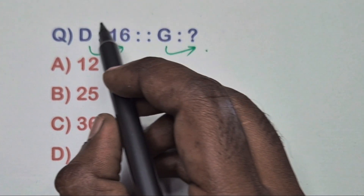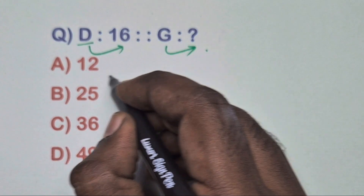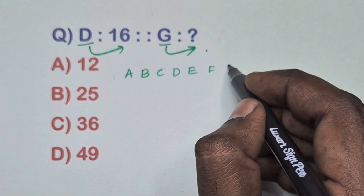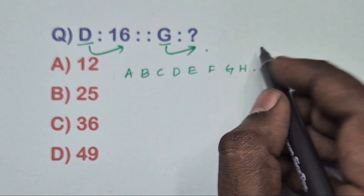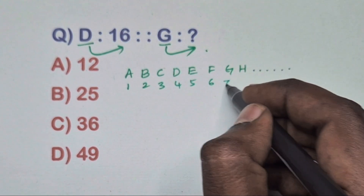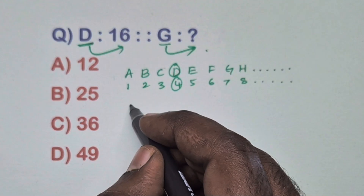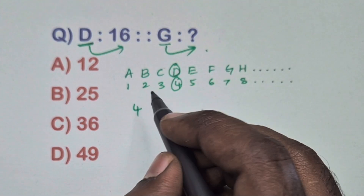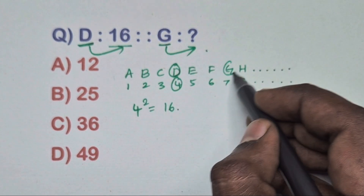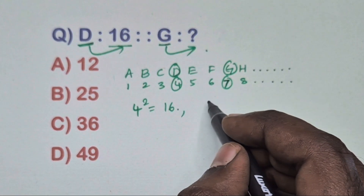This question involves alphabets and numbers. Find the relation: take D. The alphabets go E, F, G, H and so on, and we find the numbers according to the alphabets. D equals 4, so 4 squared is 16. Same way, G equals 7, so 7 squared is 49.